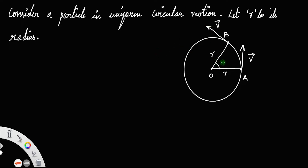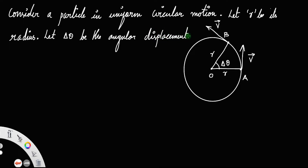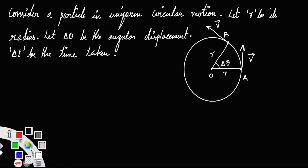Let us call this angle delta theta, which means let delta theta be the angular displacement. Let the time taken by the particle to move from A to B be delta t. Now, if you consider this triangle AOB, the length AB will be the displacement of the particle — AB is the displacement delta S in time delta t.